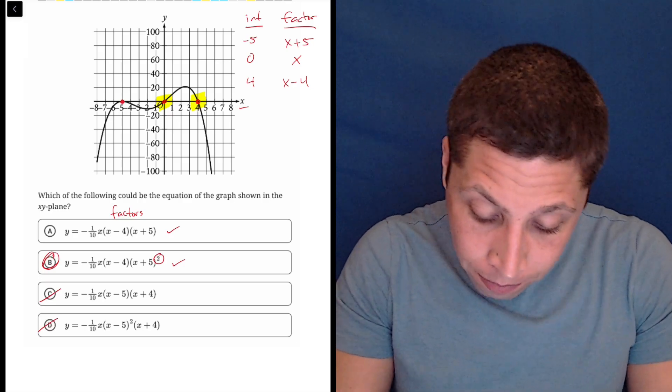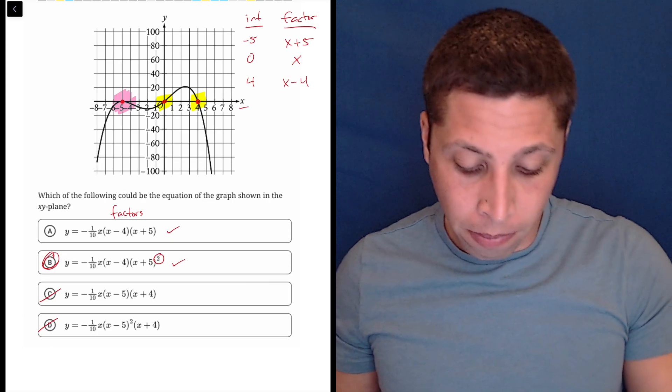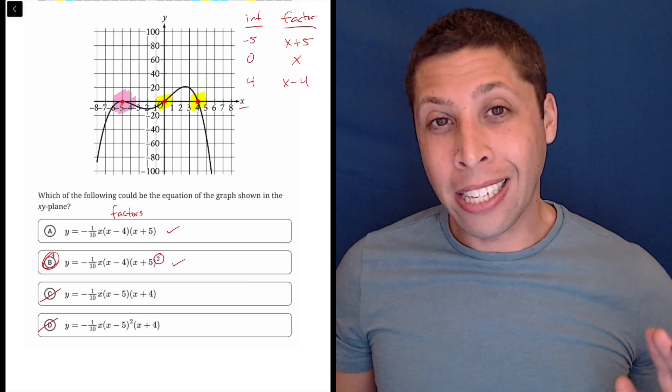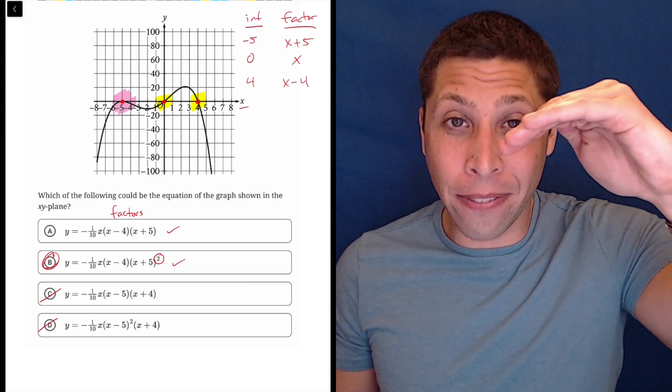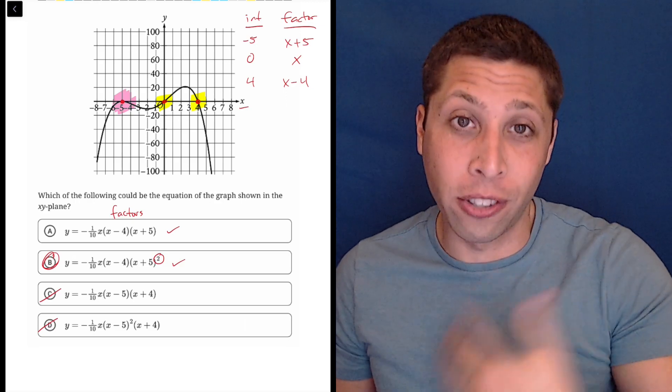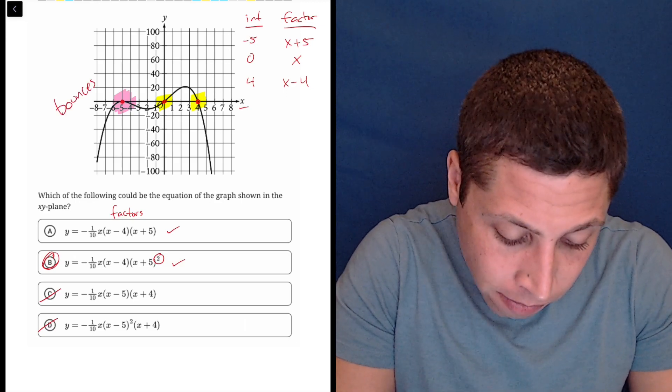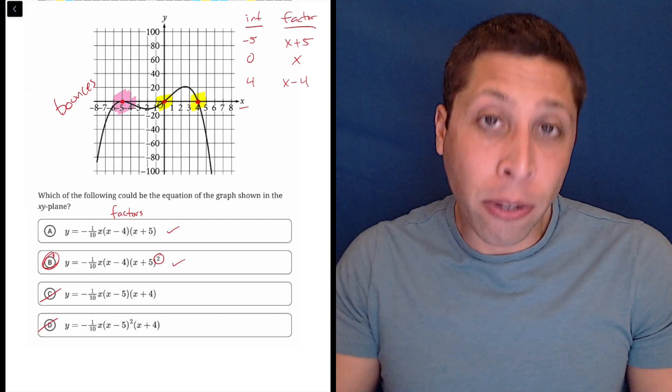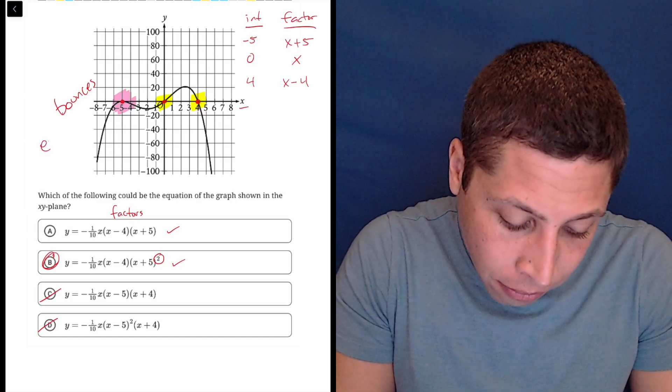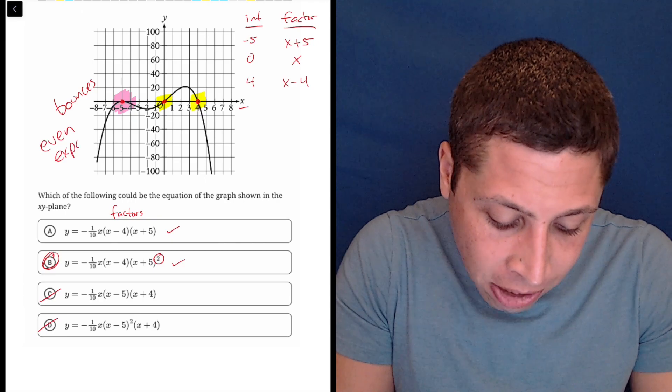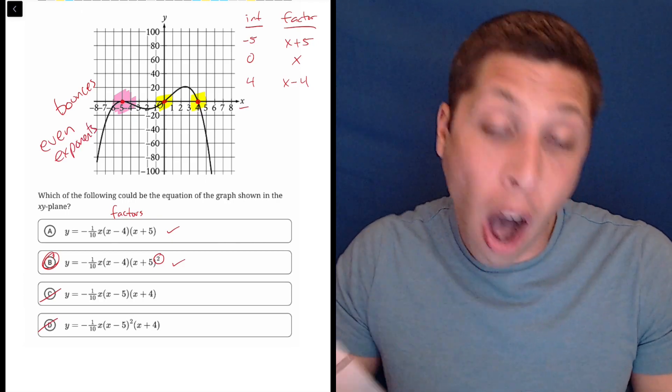But at the negative five, it does something a little different. It doesn't pass through. It goes up and up and it hits the negative five and then it comes back down. It turns. The word I would use is that it bounces.